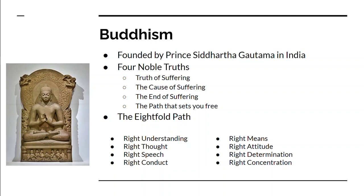Prince Siddhartha Gautama was a practicing Hindu, and this was an alternate path he was giving on how to reach Moksha. It is the students of Buddha who took his beliefs and created the religion of Buddhism today. And instead of just being an alternate way to reach Moksha, followers of Buddhism believe that Buddha was actually giving you the way to nirvana — to complete spiritual release.